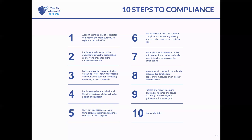Second, implement training and policies across your organisation so everyone understands the basics and how data protection relates to their roles. Third, have your register of processing activities and document the kind of processing you're doing — what data, how, and why it's lawful. Fourth, put in place privacy policies for all your data subjects — not just a website privacy policy covering contact forms, but privacy information for each category of data subject you've identified.